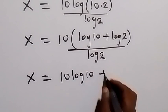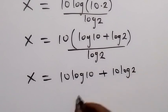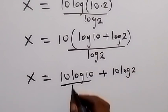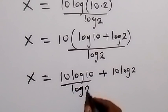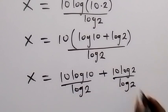So all divided by log 2 still means this divided by log 2 and this divided by log 2.